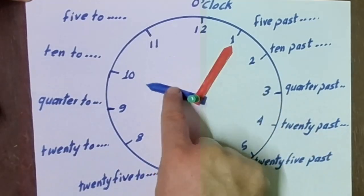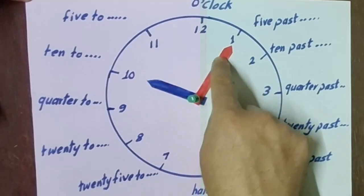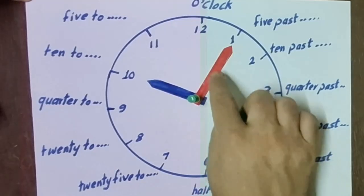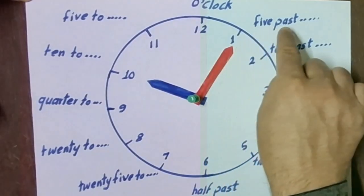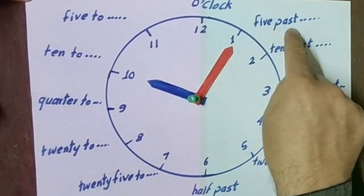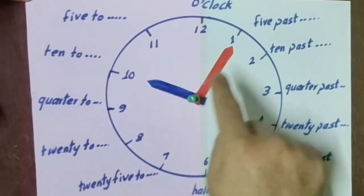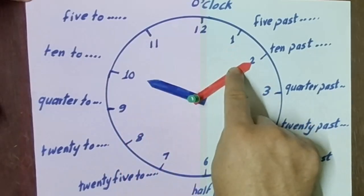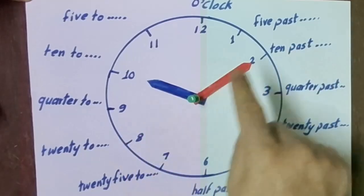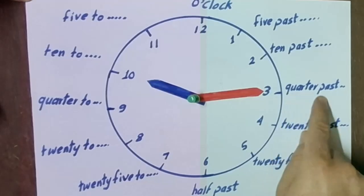For example, when the short hand is on 10 and the long hand is on 1 and someone asks 'What time is it?', we say 'It's five past ten.' When the long hand goes to 2, we say 'It's ten past ten.'